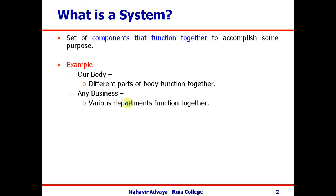In a business system, different departments and sections work together and interact to run the business efficiently. When we talk about a system, there are different users who deal with it — they provide something to the system and in turn get something from it. We consider the system as a black box where every user puts something in and gets something out. In software engineering, we deal with information systems where different modules function together.